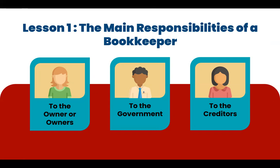To the government: records are required by government institutions such as the Bureau of Internal Revenue and the Securities and Exchange Commission. Businesses are obliged to submit annual financial reports to these institutions. In the case of the Bureau of Internal Revenue, financial statements are used to assess the taxes that should be paid and to determine whether a firm has paid its taxes. To the creditors: records provide suppliers and other creditors a reference as to whether they will extend credit to the business. They can gauge the paying capacity of the business and determine how much loan they can offer.